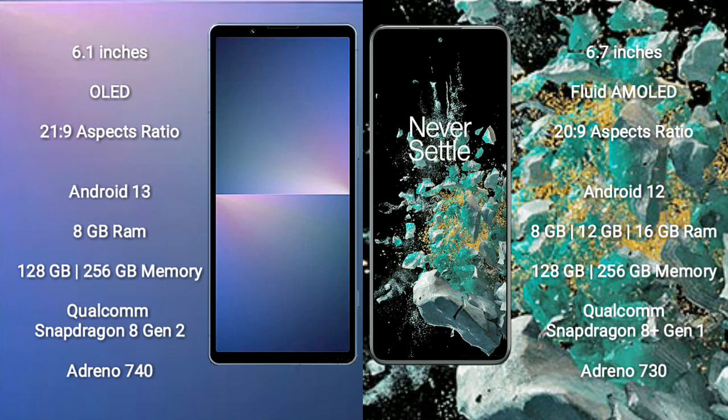Sony Xperia 5 Mark 5 runs on the Android 13 operating system. OnePlus 10T runs on the Android 12 operating system. Sony Xperia 5 Mark 5 comes with 8GB RAM and 128GB to 256GB internal storage, with a Qualcomm Snapdragon 8 Gen 2 processor.